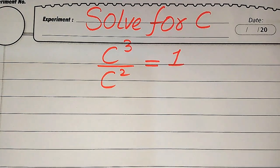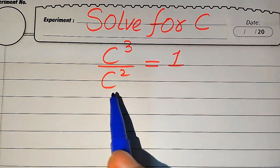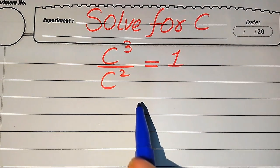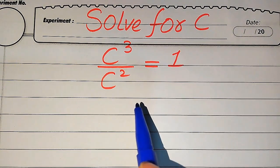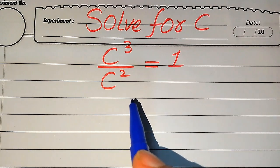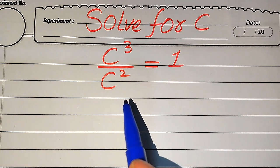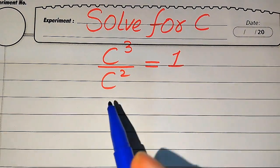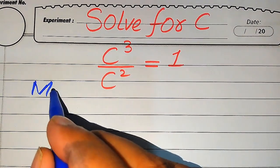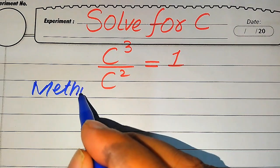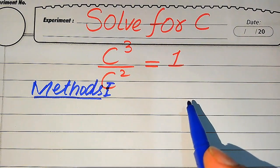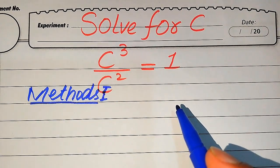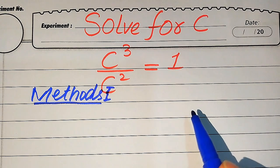Hello everyone. How to solve this problem: for the values of C, if we have C cubed divided by C squared equals 1. Here we find all the roots or all the solutions of this equation. First we find all the roots, and at the end we will verify which of the roots are solutions and which are extraneous roots. We will solve this problem using two methods.